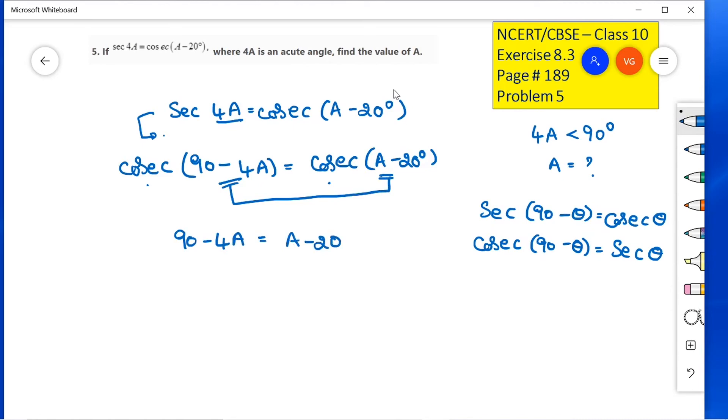Bring 20 to one side and A to the other side. 90 plus 20 equals A plus 4A. So, 5A equals 110. Then, A equals 22 degrees.